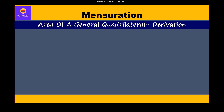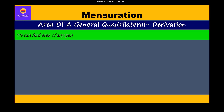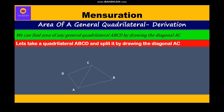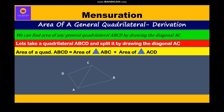We can find the area of any general quadrilateral, say ABCD, by drawing the diagonal AC. Let's take quadrilateral ABCD and split it by drawing diagonal AC. Therefore, we can say the area of quadrilateral ABCD is equal to the area of triangle ABC plus the area of triangle ACD.